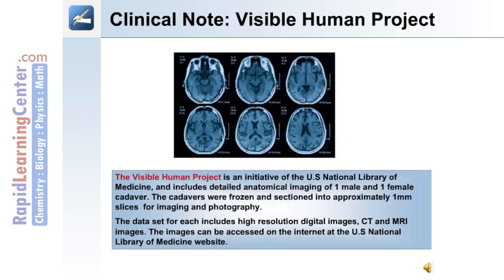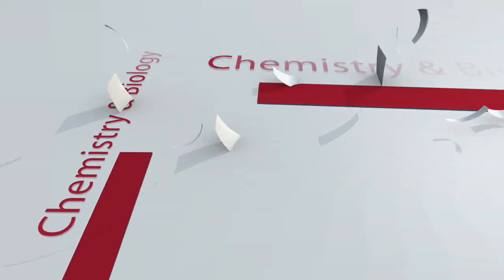The following is a clinical note on the Visible Human Project. The Visible Human Project was an initiative of the U.S. National Library of Medicine. It includes detailed anatomical imaging of one male and one female cadaver. These cadavers were frozen and sectioned into approximately 1mm slices for imaging and photography. The dataset for each includes high-resolution digital images, CT, and MRI images. The images can be accessed on the Internet at the U.S. National Library of Medicine website.